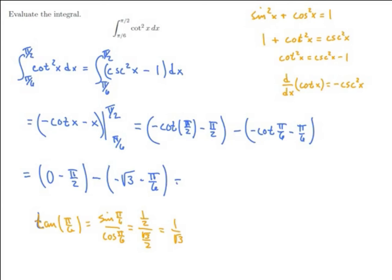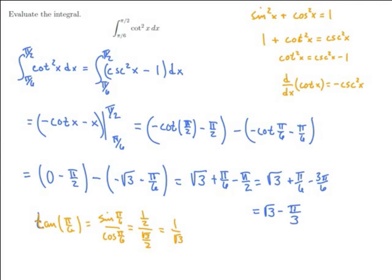Distributing the negative signs, I have square root of 3 plus pi over 6 minus pi over 2. Pi over 2 is 3 pi over 6, so this is square root of 3 plus pi over 6 minus 3 pi over 6, which is square root of 3 minus 2 pi over 6, which simplifies to square root of 3 minus pi over 3.